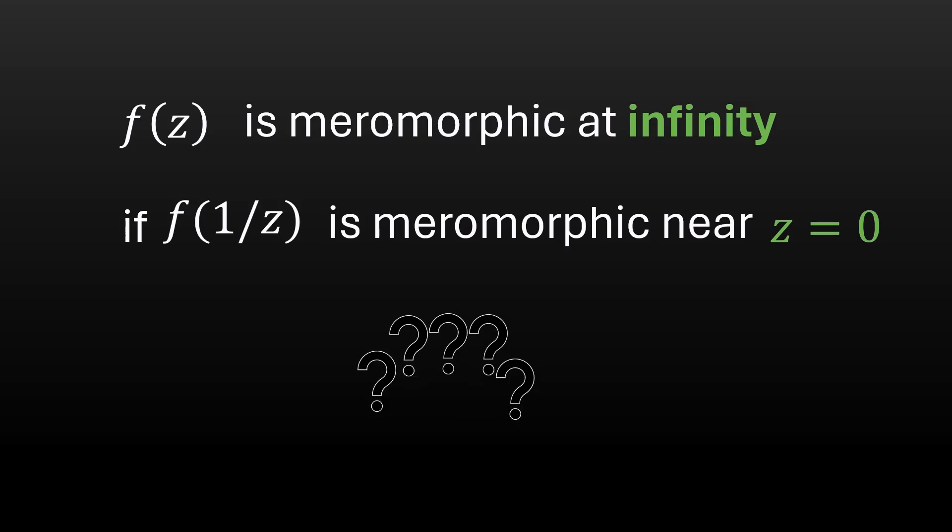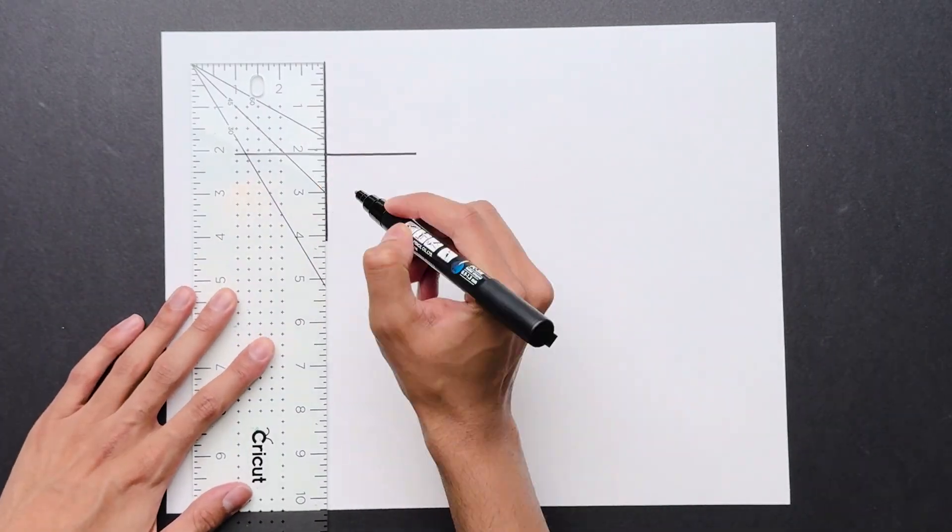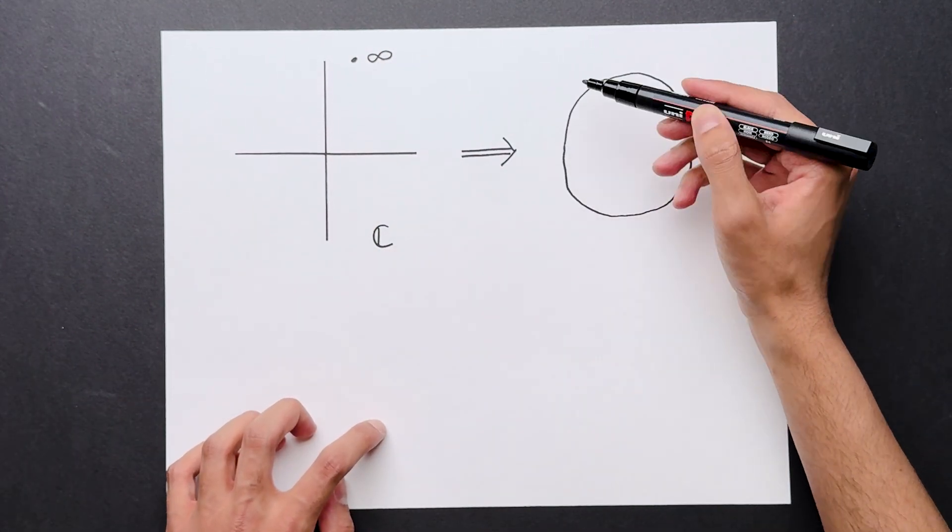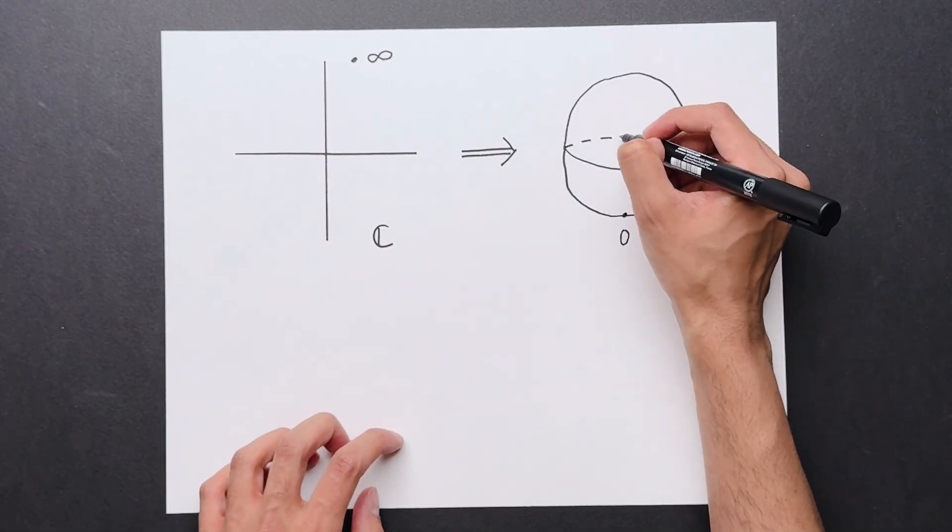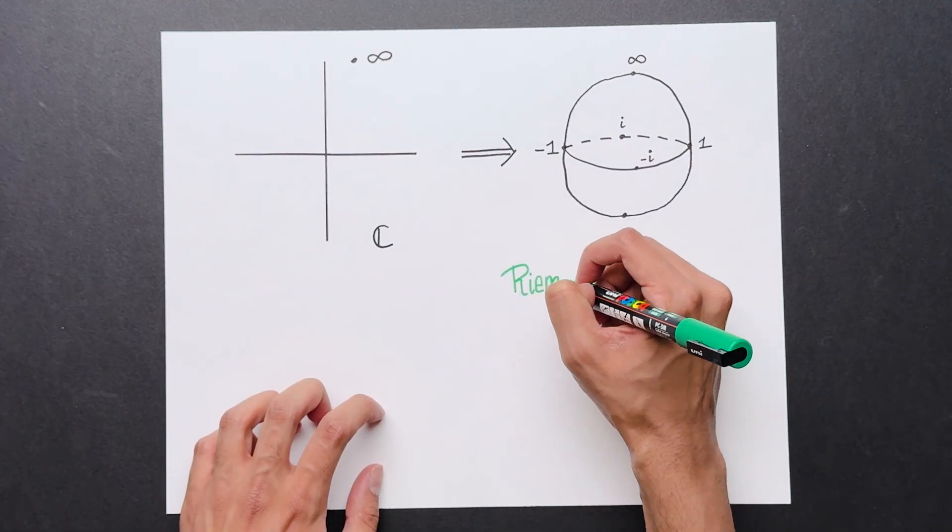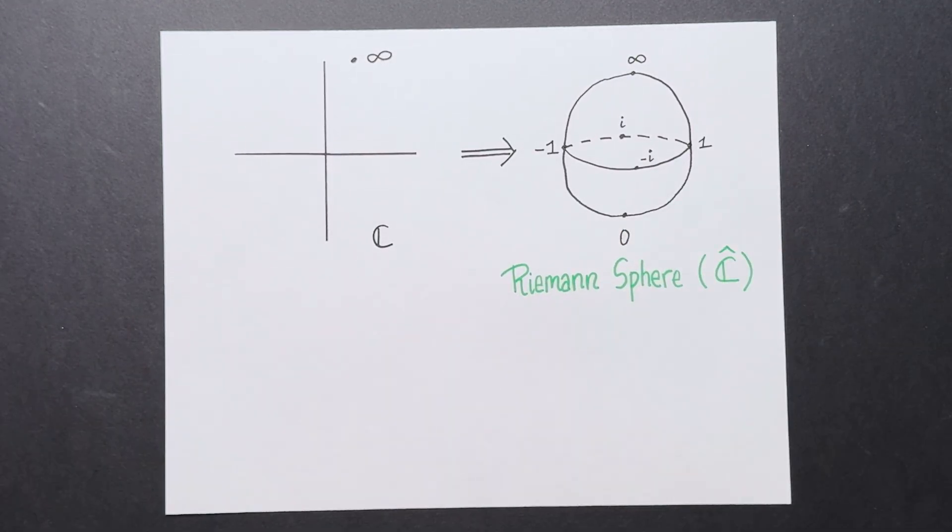So far, we've been working with the complex plane, C. What we can do is adjoin an extra point, called a point at infinity, to the complex plane. We can visualize this like a sphere. The south pole is 0, the equator is the unit disk, and the north pole is this point at infinity. This is called the Riemann sphere, and we'll denote this by C hat. As a set, this is just equal to C union infinity.